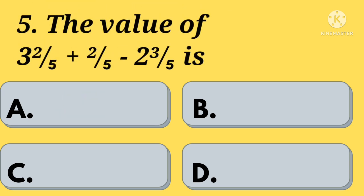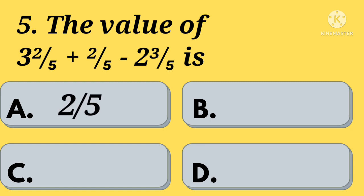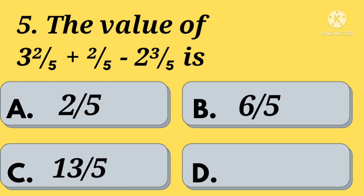The value of 3 and 2 by 5, plus 2 by 5, minus 2 and 3 by 5 is — Option A: 2 by 5. Option B: 6 by 5. Option C: 13 by 5. Option D: 17 by 5. Your time starts now.